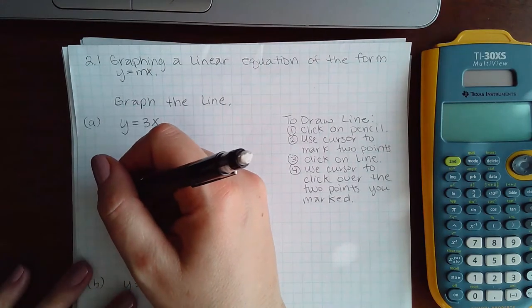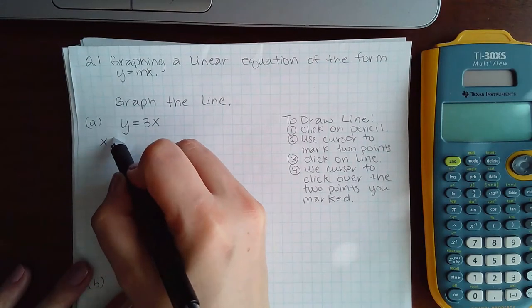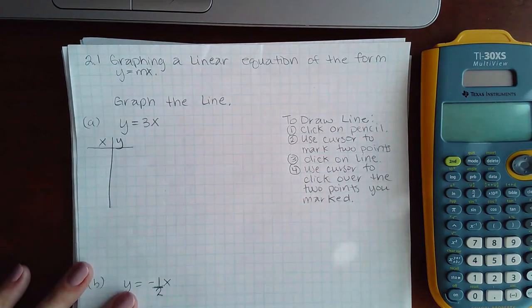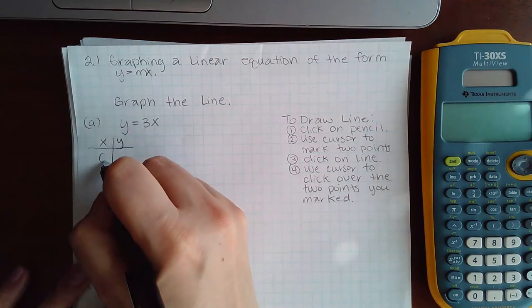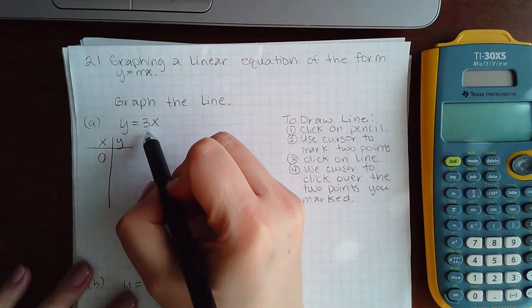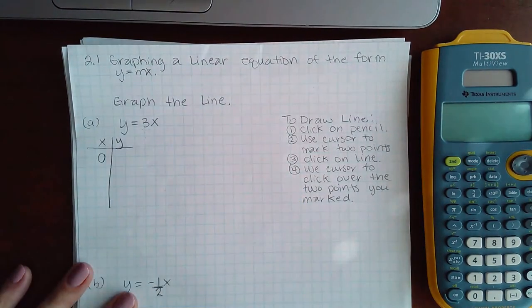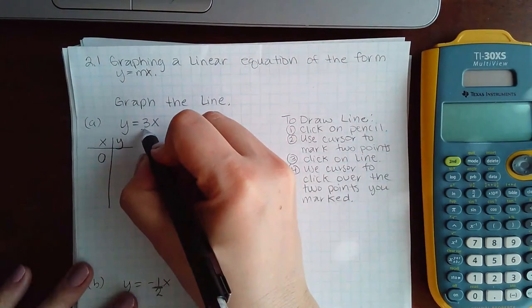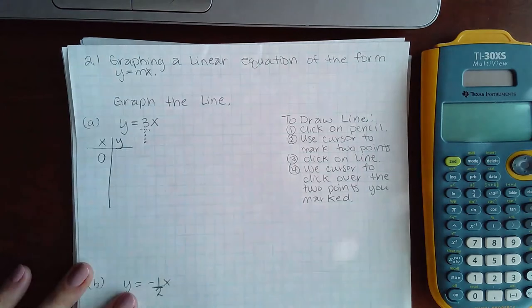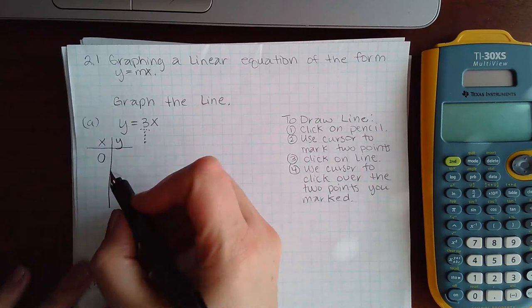So what we need to do is essentially what we did a couple of topics ago - we need to create our own chart. Now, you already know that I like to plug in zero, and then the second number I like to plug in is the denominator. So if you think of this as a fraction, there's a one in the denominator, right? It's a little invisible one because any whole number can be written as that number over one in fraction form.